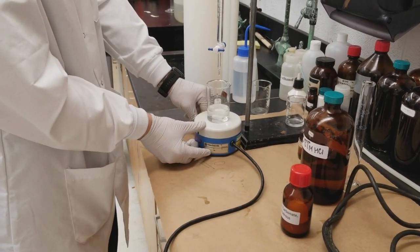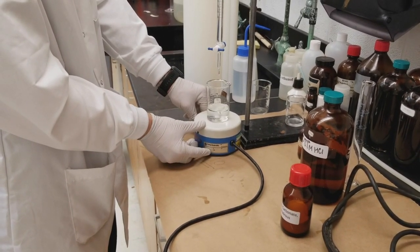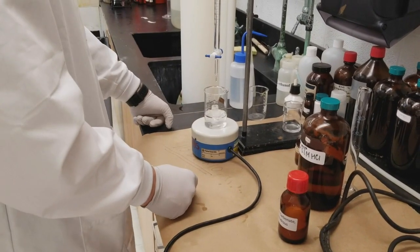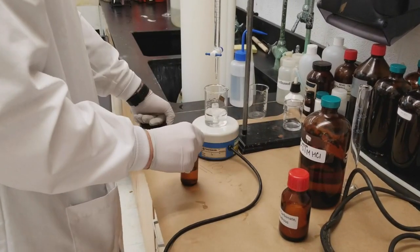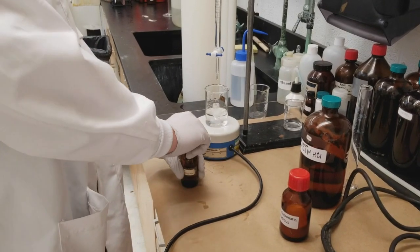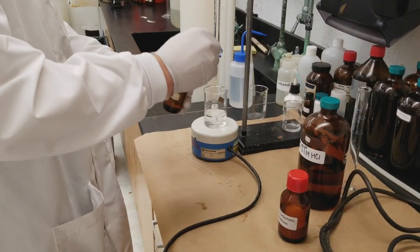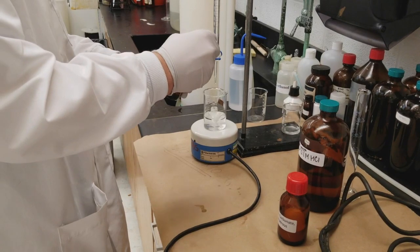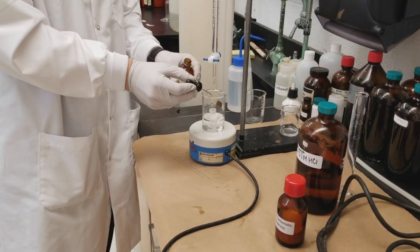You want to start slow, start on the slow setting. So now we've got our sodium carbonate solution mixing, and we're going to add two drops of our phenolphthalein indicator. The solution is going to turn a very vibrant pink color.